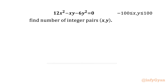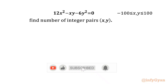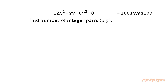Welcome to Infigyan friends. Today in this video we have one very interesting question from AIME 2025, problem number 4. We have to find the number of ordered pairs x and y, where x and y belong to integers, with x and y lying in the interval minus 100 to 100, endpoints included. So let's get started.